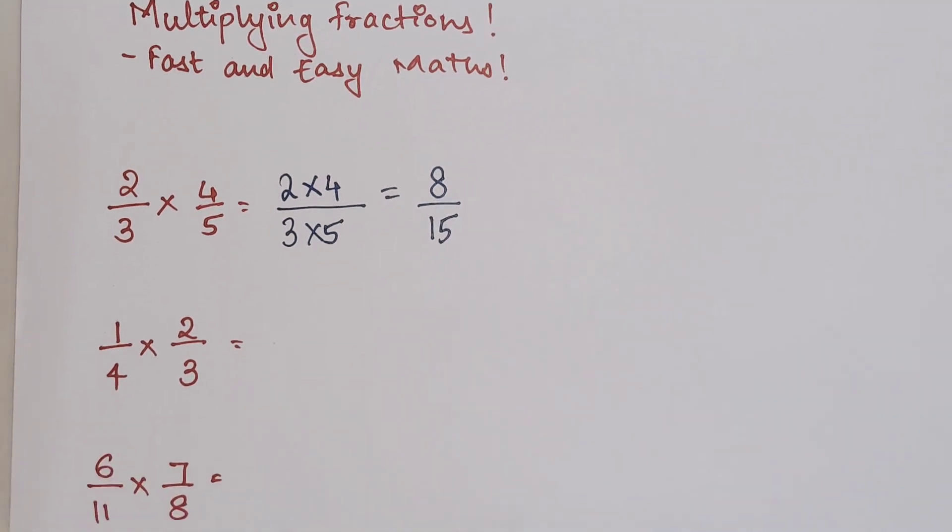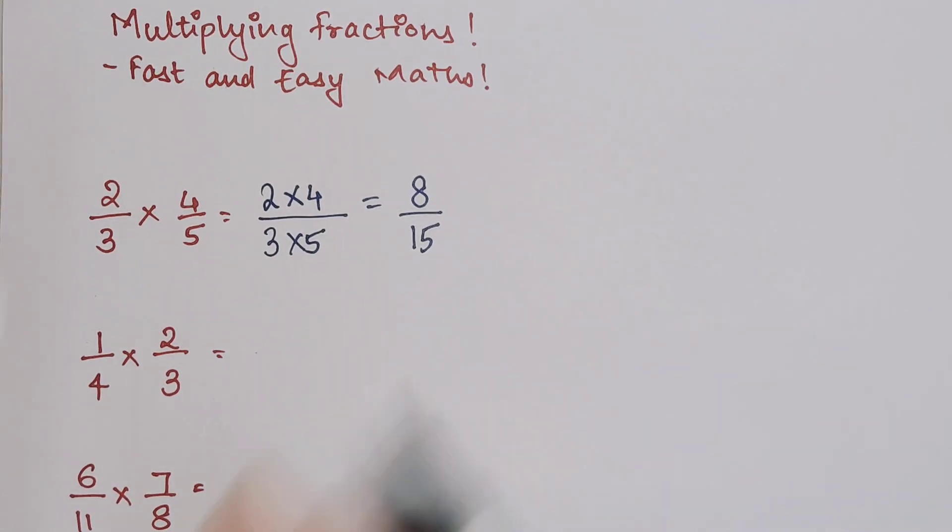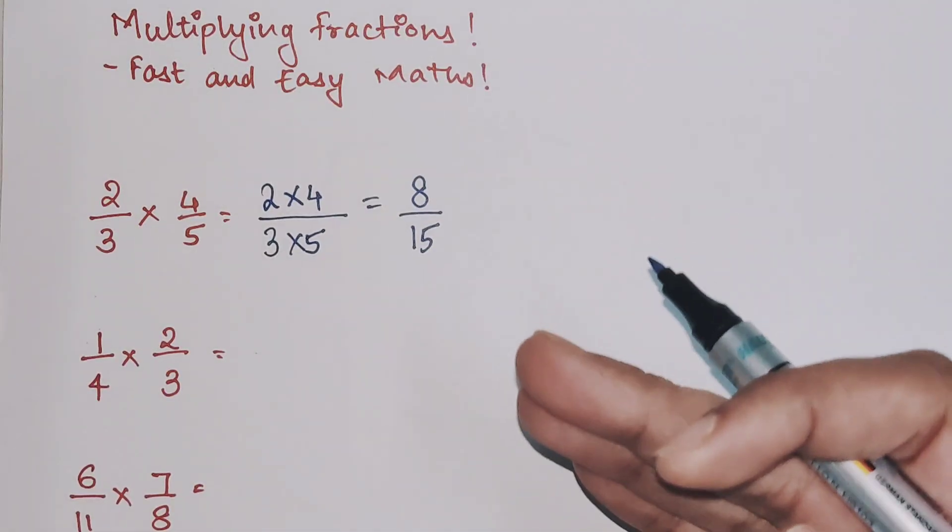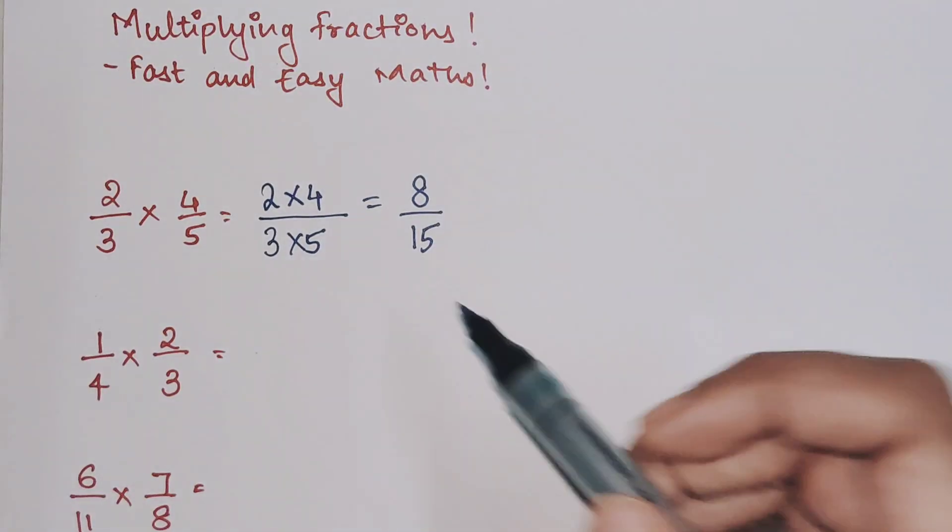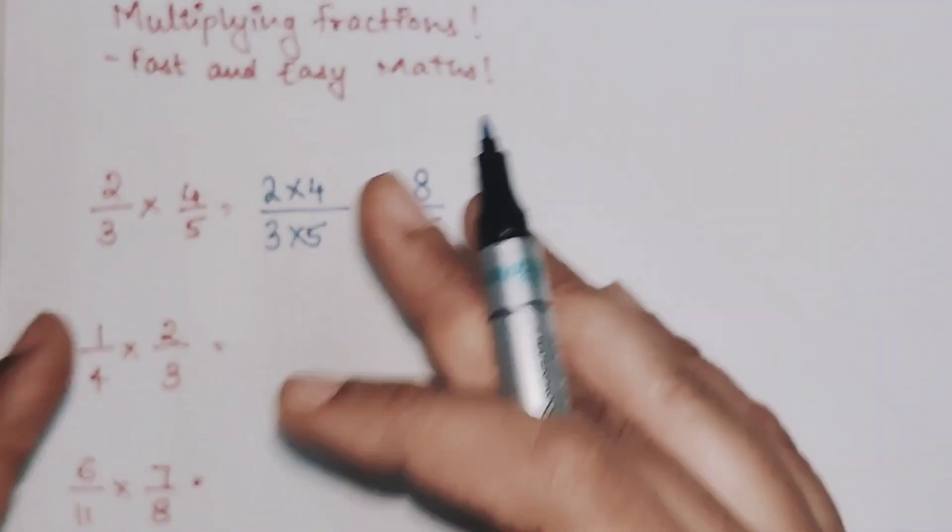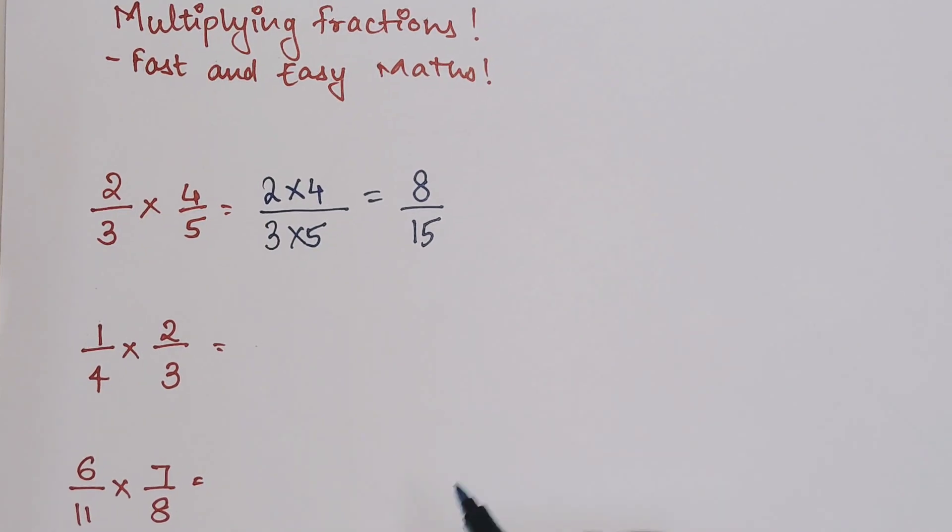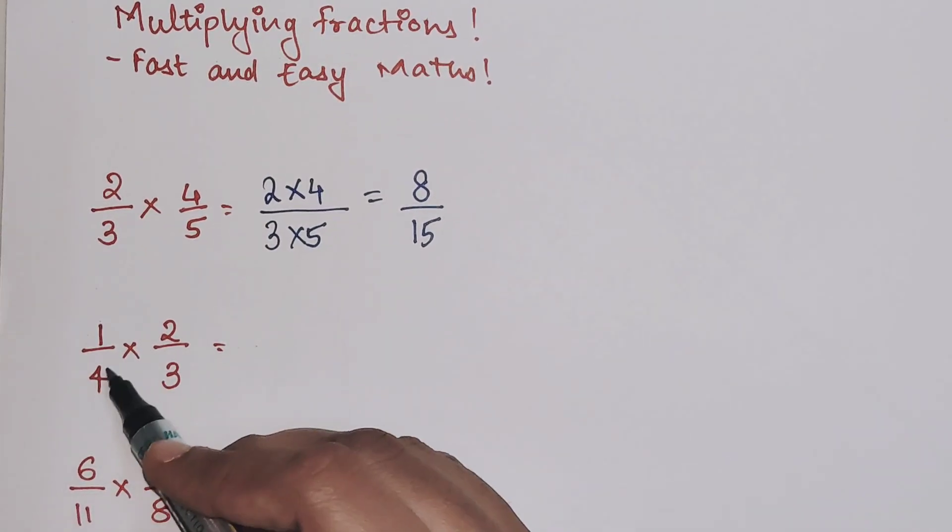I hope this is very clear. Now, why do people get stuck in multiplication or why the answers come out wrong? Because there is another step which happens in most cases. We will have to do that step, and what is that step? Simplifying the fractions further.